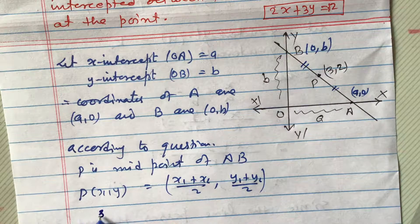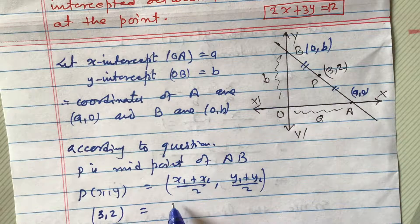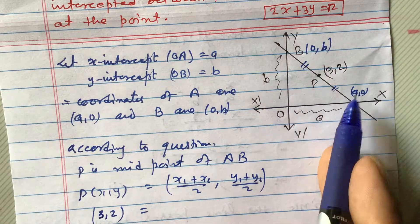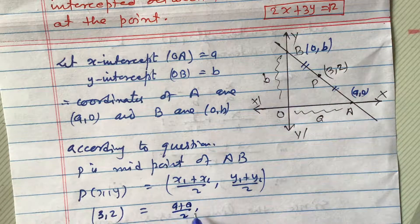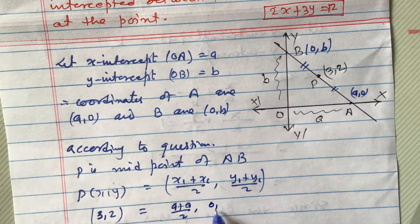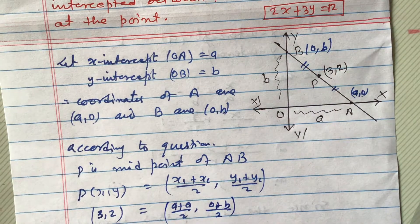P(x, y) is (3, 2) is equals to x1 plus x2 means x1 is A, x2 is 0. (A plus 0) by 2 comma y2, this is 0 plus B, (0 plus B) by 2 like this.